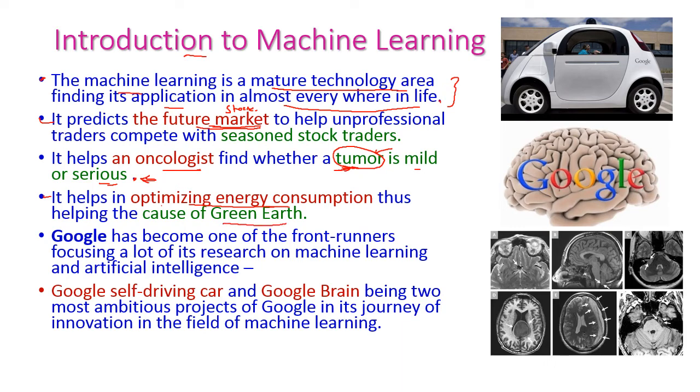Google, we know very well, is investing a very huge amount to do research in machine learning and artificial intelligence. The most important products of Google are the Google car and the Google brain.